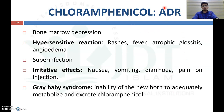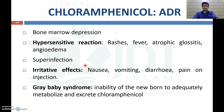Adverse drug reactions of chloramphenicol include severe bone marrow depression, which reduces the immune response — both antibody-mediated and cell-mediated immunity — increasing the chance of secondary infections. Hypersensitivity reactions include rashes, fever, glossitis, and angioedema. Superinfection may occur due to suppression of normal GI flora. Irritative effects include nausea, vomiting, diarrhea, and pain on injection. The most important adverse drug reaction — commonly asked in MCQ questions — is the gray baby syndrome, which is a specific adverse drug reaction of chloramphenicol.